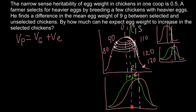This is why we have regression to the mean, and why the mean response to selection will be between the original mean and the mean of the selected individuals. Now we can solve our problem.